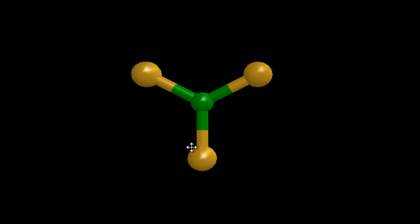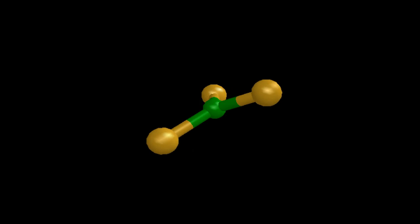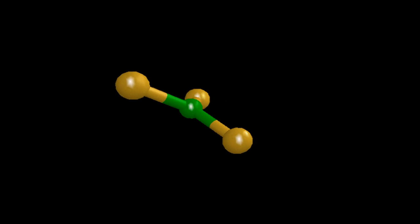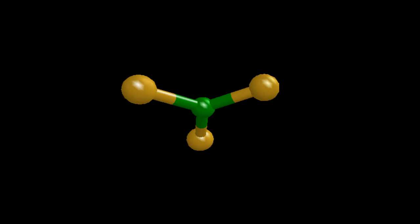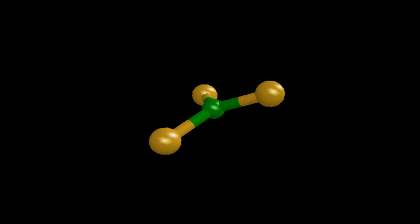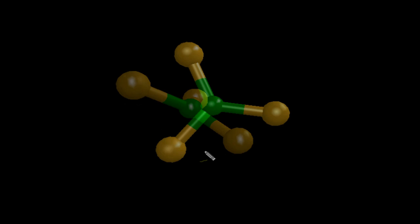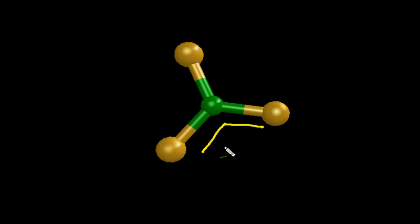So this is what a trigonal planar molecule would look like in three dimensions. You can see that it's flat, and that those atoms are spread out as far away as they can from each other in that plane. Note that the bond angle is 120 degrees, as we saw in the table, for this trigonal planar molecule.